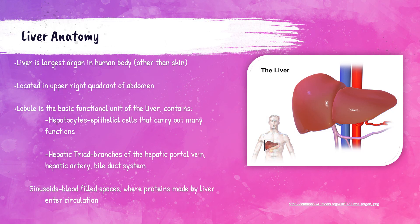Anatomy and physiology courses are a prerequisite for MLT and MLS programs, so the anatomy of the liver will not be discussed in depth within this presentation. The picture on the right-hand side shows what the liver looks like and where it is located within the human body. Recall that the nephron is the basic functional unit of the kidney — the basic functional unit of the liver is the lobule.